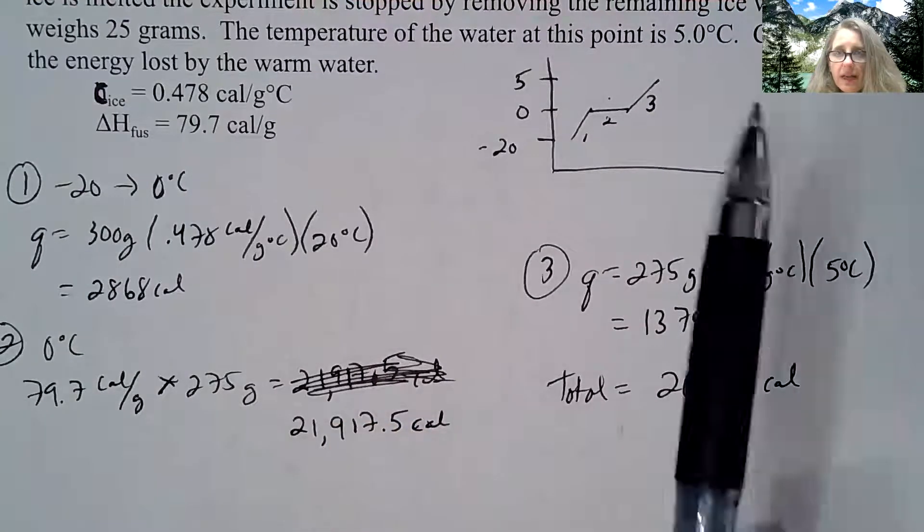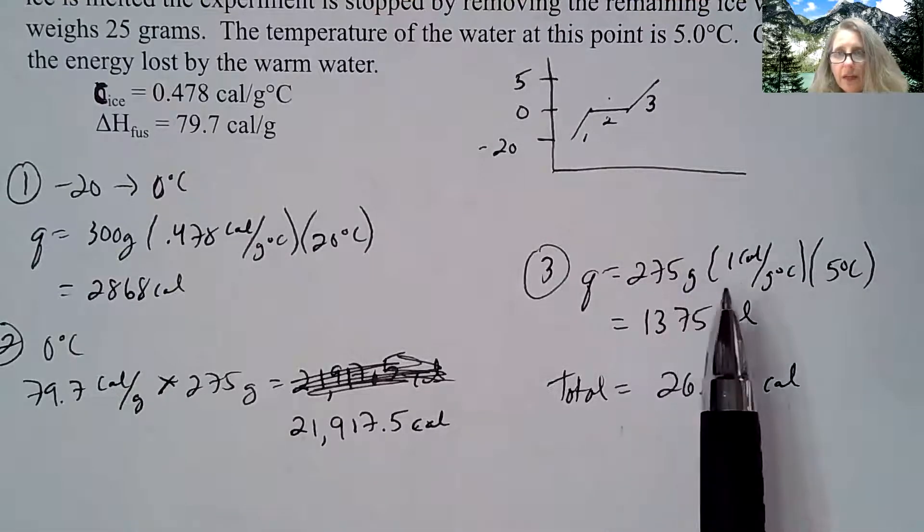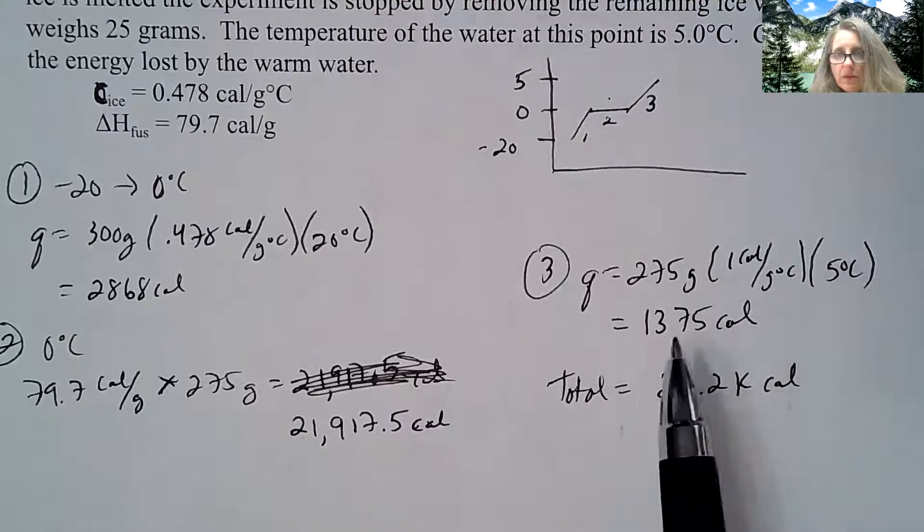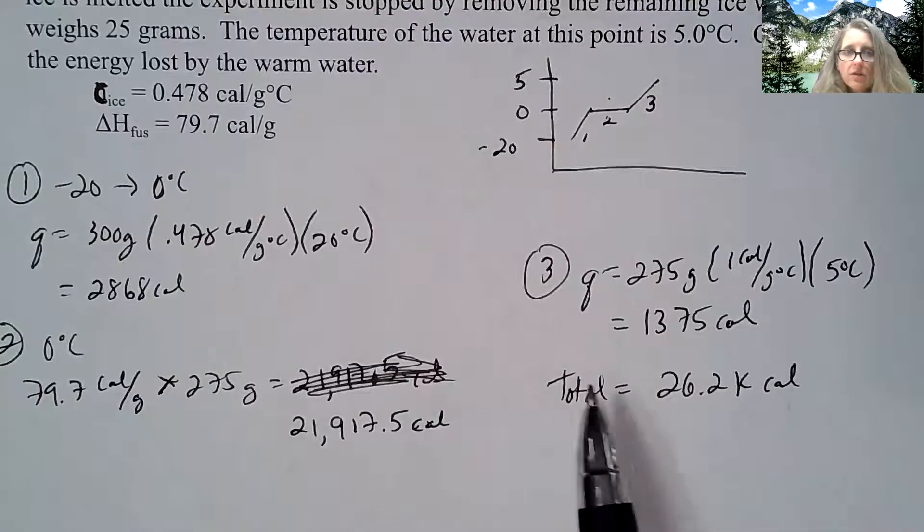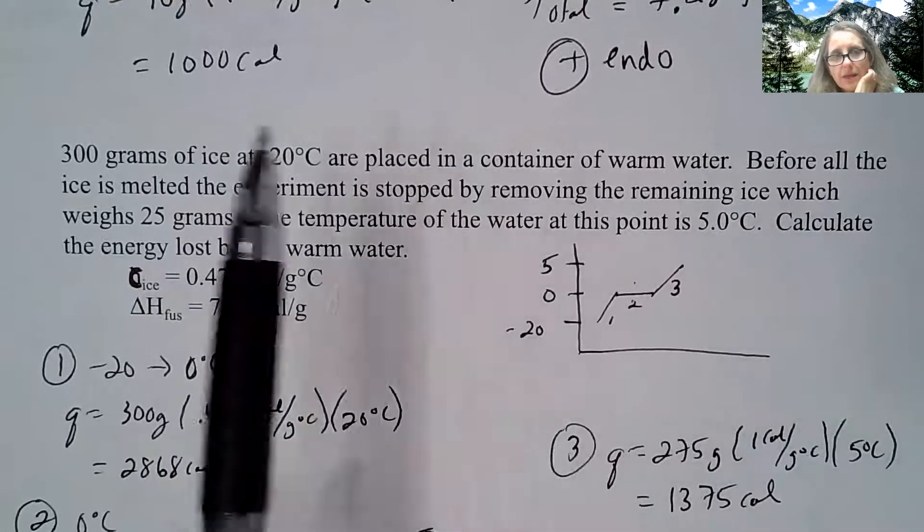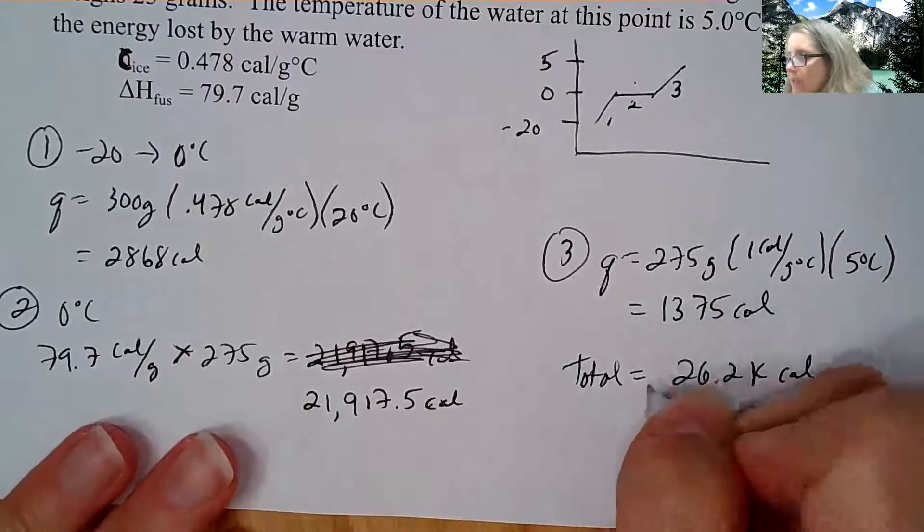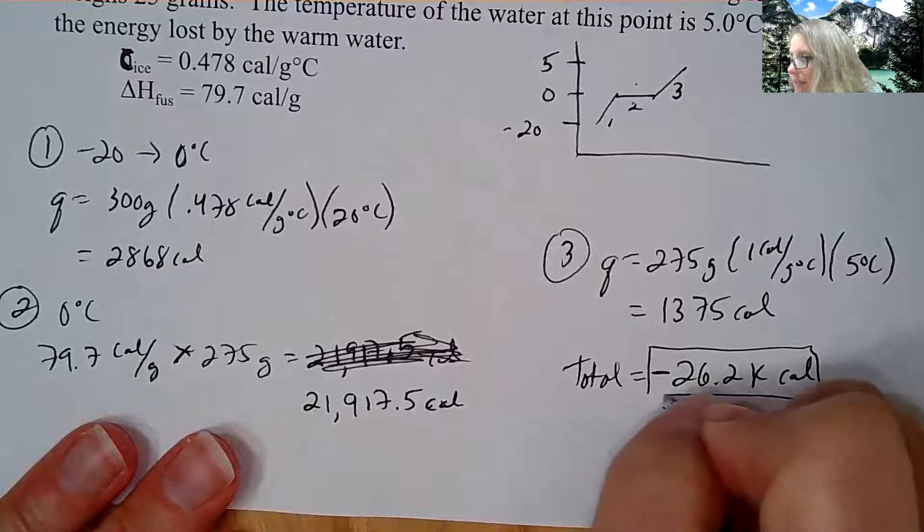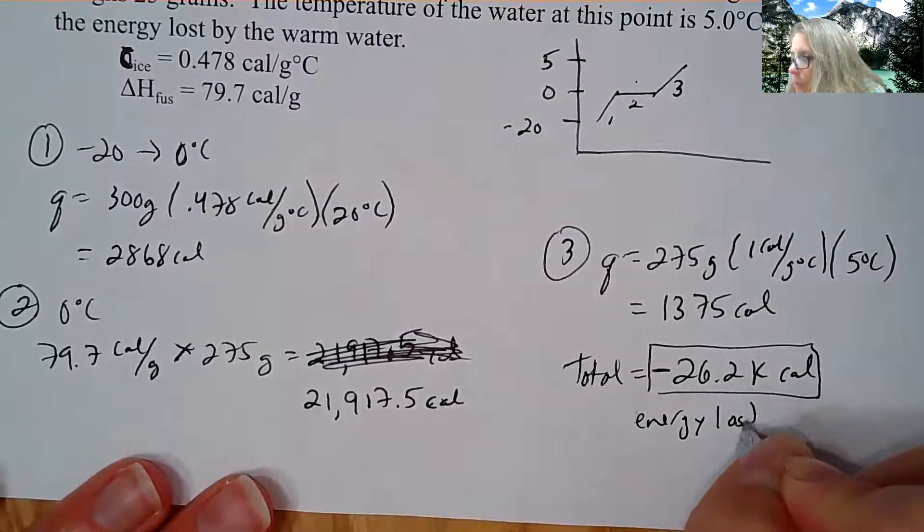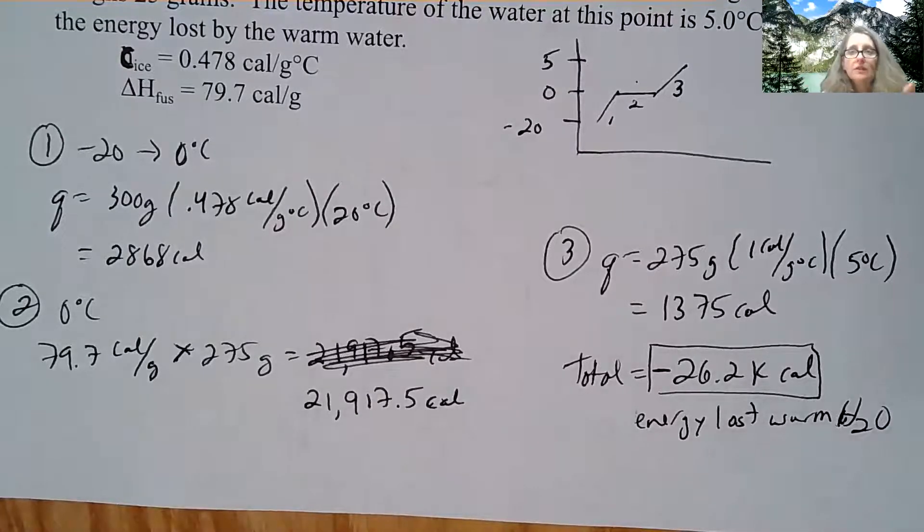And then last step, I'm taking the liquid and changing it to five degrees Celsius. So I take 275 again, one calorie per gram degree Celsius, five degrees Celsius is 1375 calories. So if I add that all up, I get 26.2 kilo calories. Now, what did the question ask for? It said the energy lost by the warm water. So what you have to be careful about, like we've seen before, is this has to be a negative number because energy is being lost by the warm water. So it's focusing again on heat transfer. And just be aware of, again, are you talking positive or negative when you're doing these types of calculations?